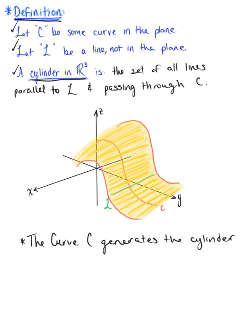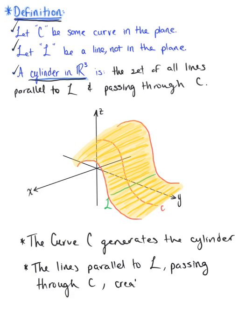And we also have that the lines parallel to L passing through the curve C are what generates the surface. So all of the lines parallel to L passing through the curve C are what creates the surface. The curve generates the cylinder, while the lines passing through the curve C create the surface itself.